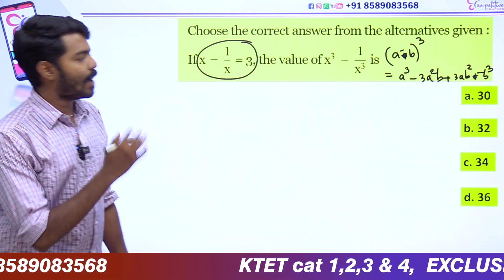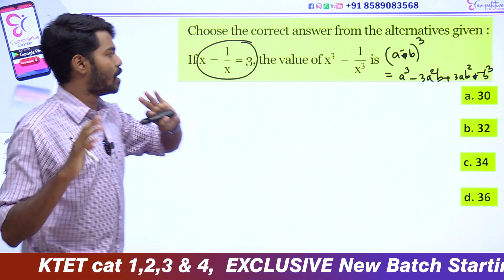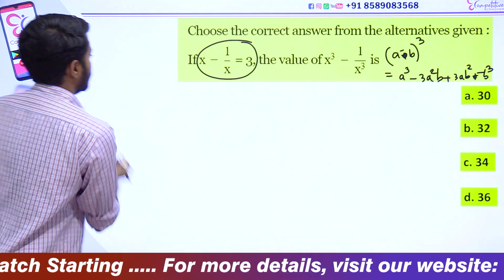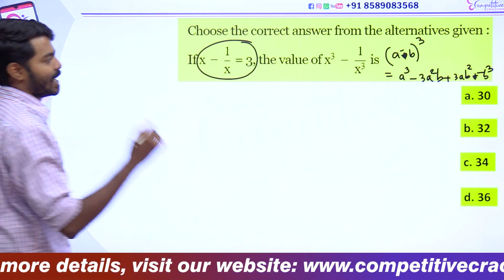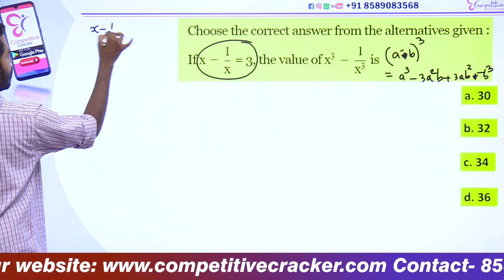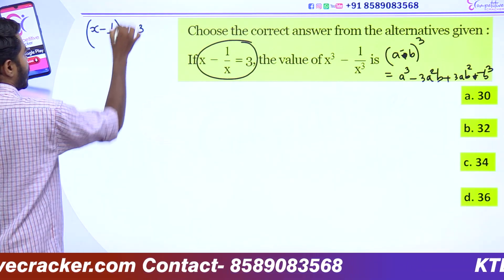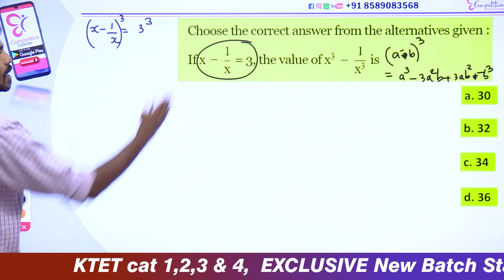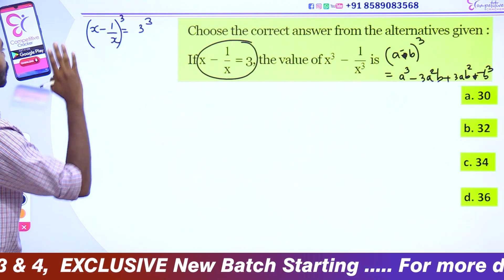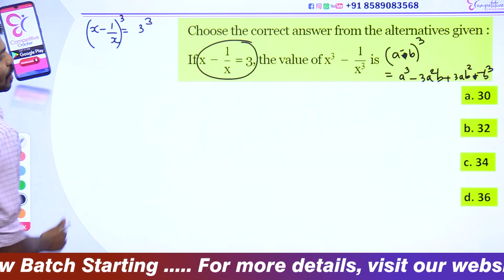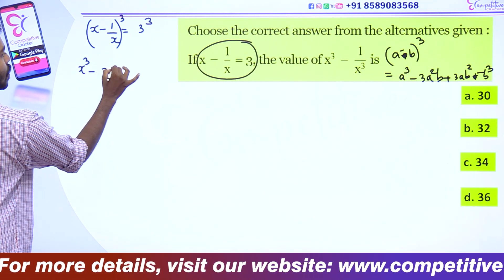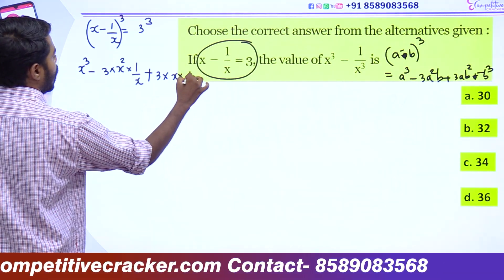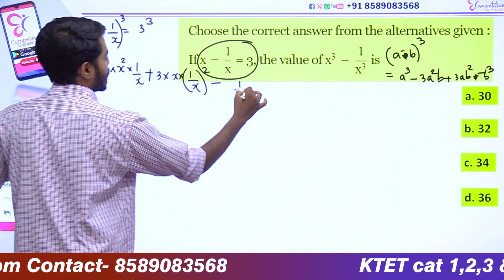This is the value of this equation. Instead of a, we have to write x, and instead of b, we write 1 by x. So we write x³ minus 3 into x² into 1/x plus 3 into x into (1/x)² minus (1/x)³. That is 1 by x the whole cube. The given value is x minus 1 by x equals 3.